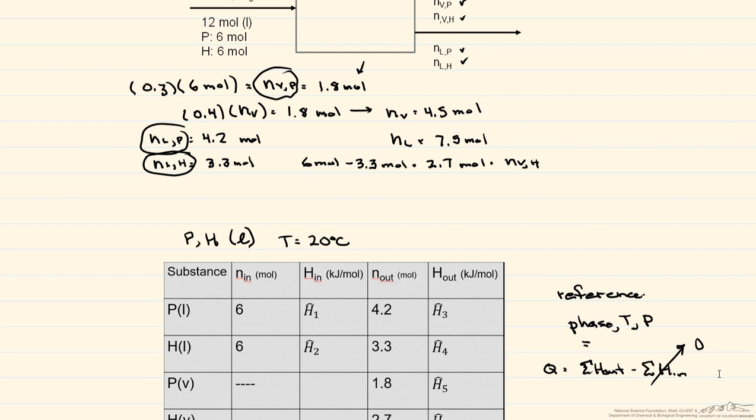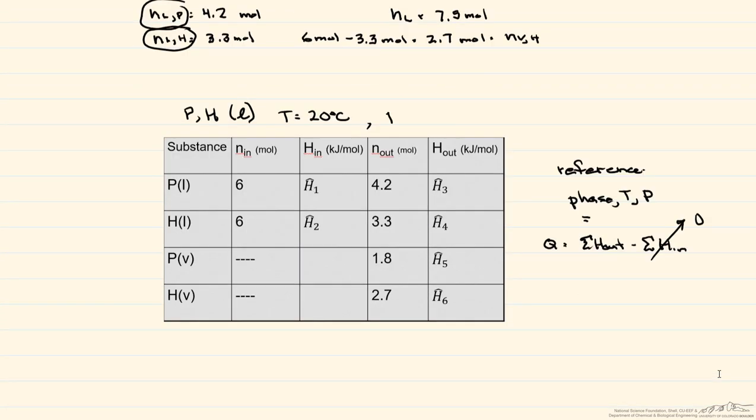And finally, for our reference pressure, we're just going to use the pressure of the system. So here's our references. And let's put in what we know based on this references. And that's going to be that H1 is going to be equal to zero, and that H2 is going to be equal to zero.